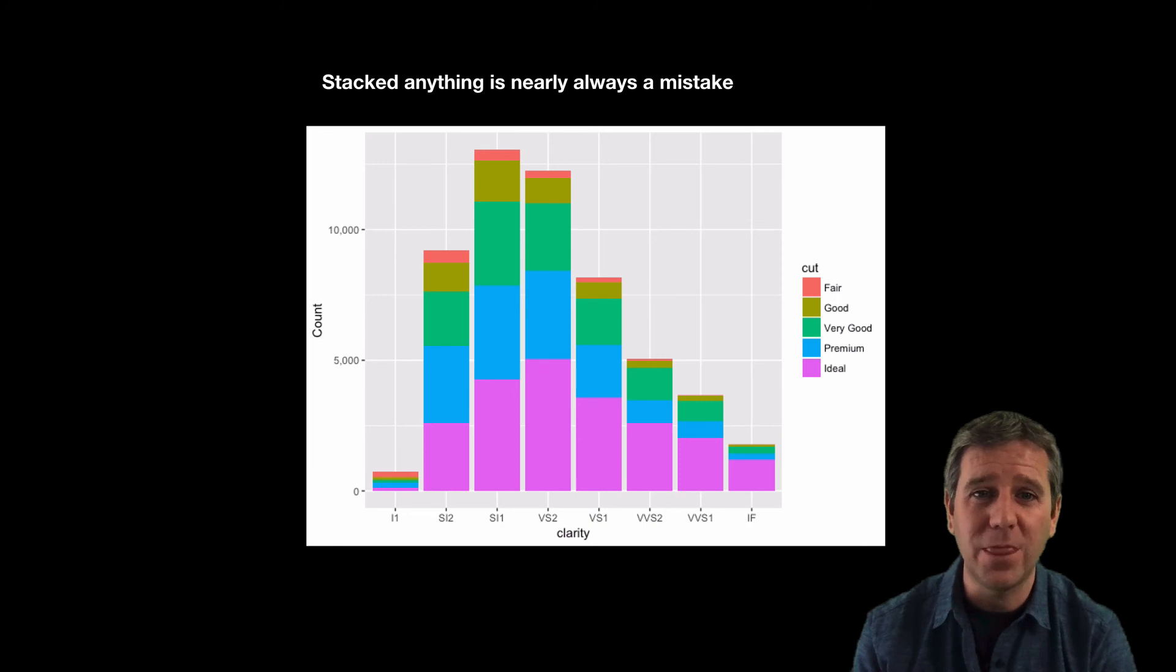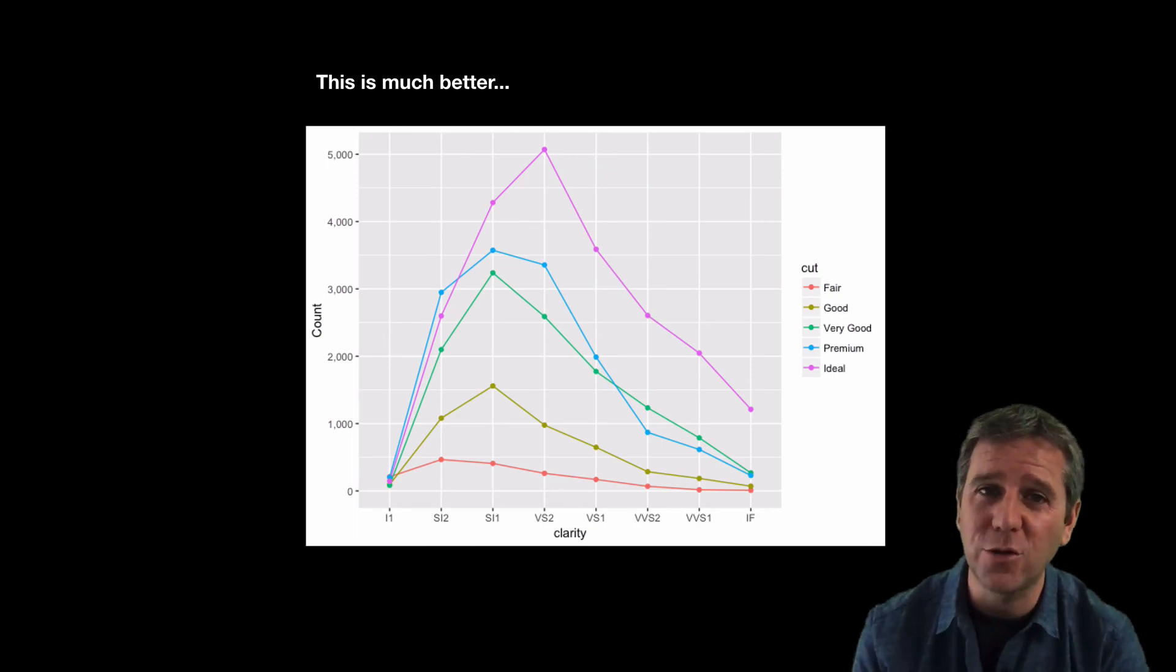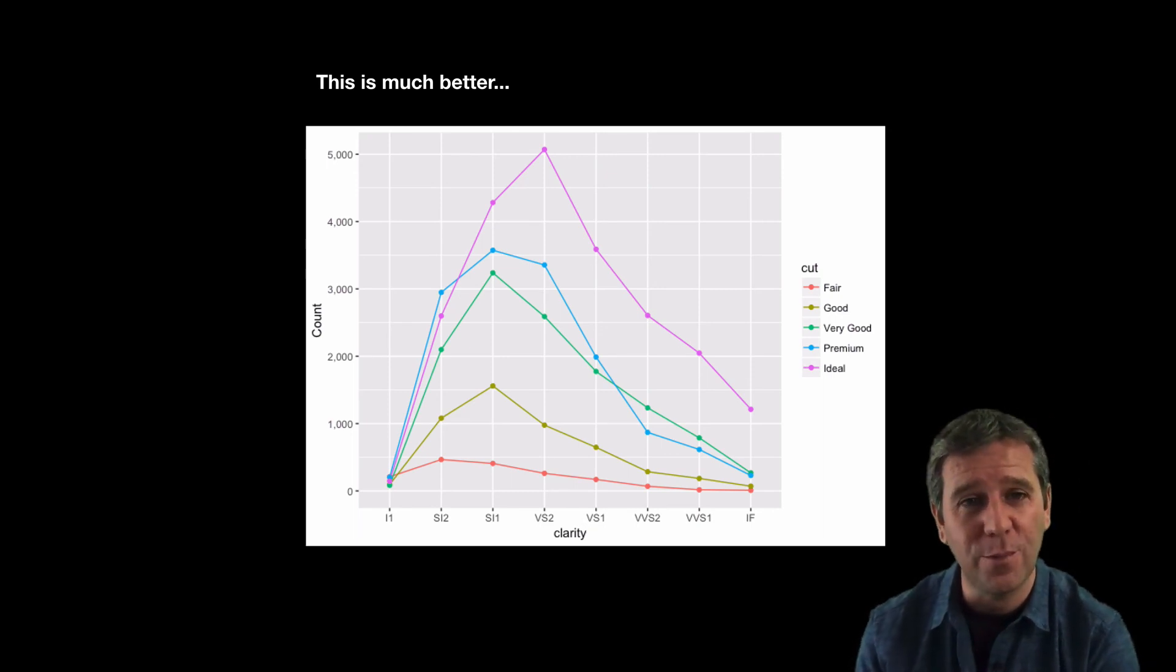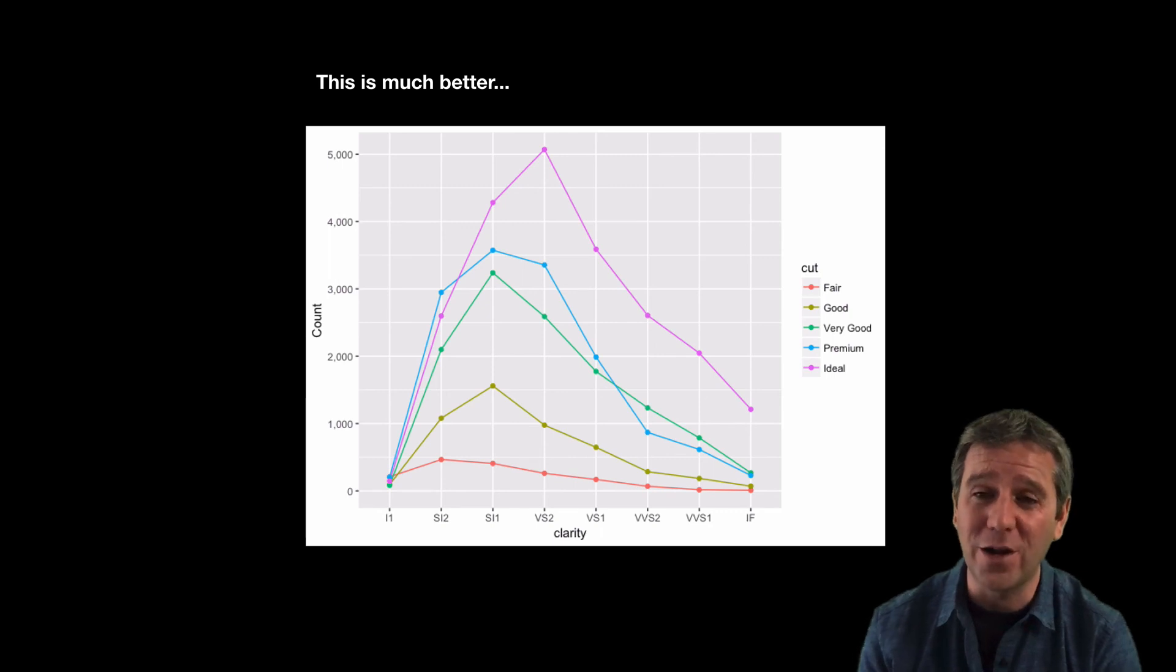Notorious for this are stacked bar charts. We can only really say things about the first category, the purple category, because all the other bars are on different unaligned scales. The point is that stacking anything is nearly always a mistake. It would be much better to show this data on aligned scales where we can compare different categories within them and between them.